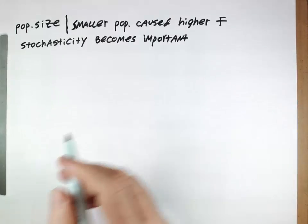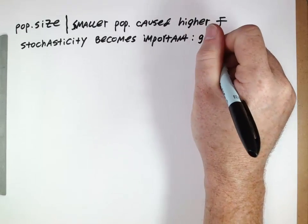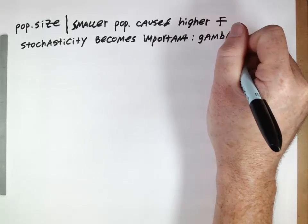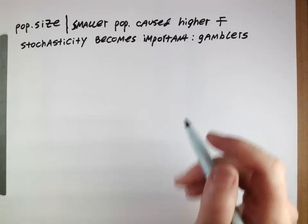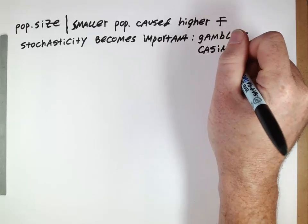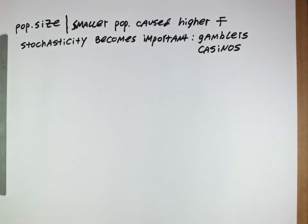One metaphor to help understand this is to think about Las Vegas and gamblers. When someone goes to Las Vegas and gambles, how do they do? Well, it depends on how lucky they are. They might be lucky and win money and come back with more than they went with, or they might be unlucky and come back with less. So how they do is greatly determined by chance. This is distinct from casinos. Casinos don't worry about luck — casinos have very reliable revenues every single month.